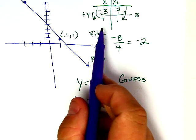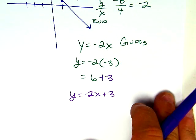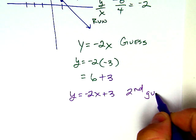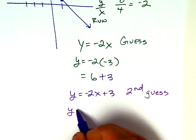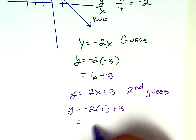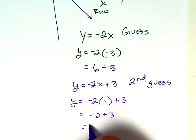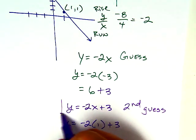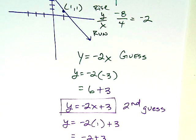I have one final point of 1, 1. The beautiful thing of that is that I can check. So here's my second guess. I'm going to go ahead and check this by plugging in Y equals negative 2 times 1 and adding 3. That's equal to negative 2 plus 3, and that's equal to 1, which is what I wanted. So therefore, I know that my second guess of Y equals negative 2X plus 3 is correct.